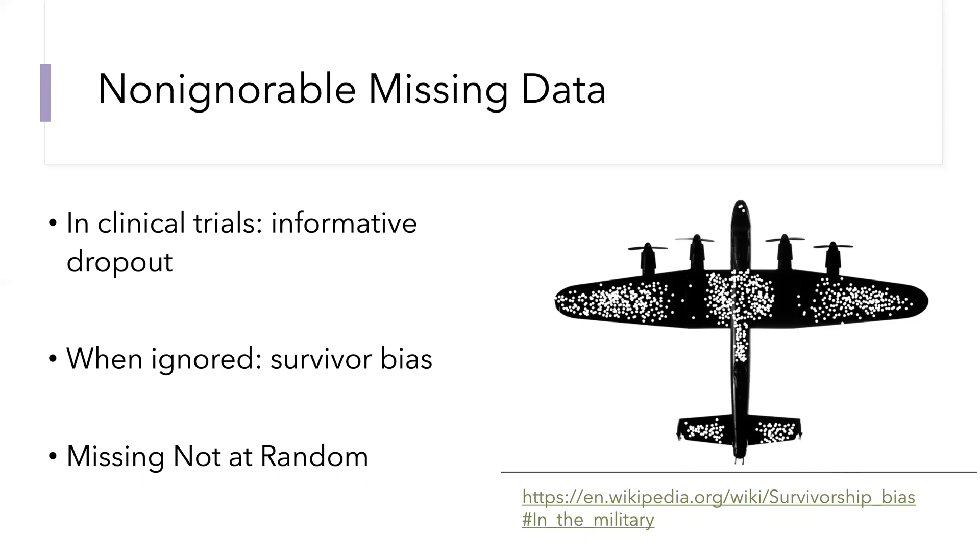Most importantly, we call non-ignorable missingness non-ignorable because when you do ignore it, then you incur a kind of survivor bias. When we talk about proteomics, we'll think of the observed peptides or proteins as the survivors, and they can be systematically different in their abundances than the non-survivors, the peptides or proteins which were not measured.